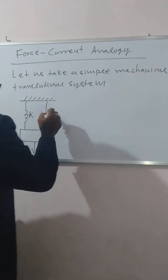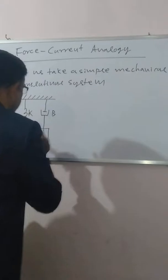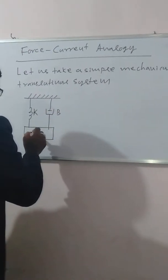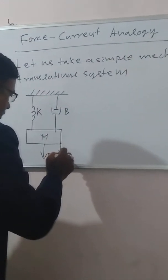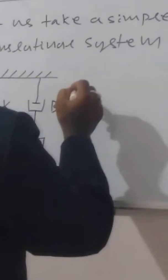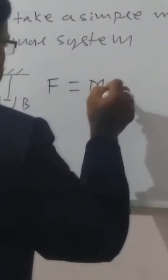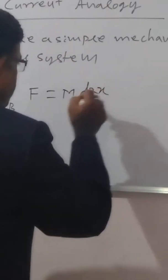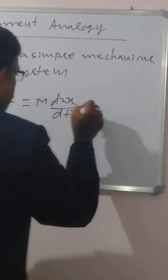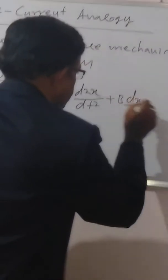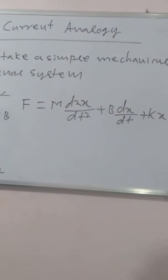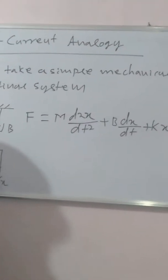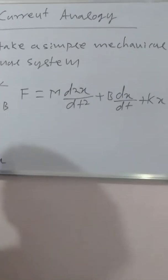This is the spring with stiffness K, this is the damping coefficient B, this is the mass M, this is the input force F, and X is the displacement due to force F. Therefore, the input force F is equal to M d²X/dt² plus B dX/dt plus KX. This is the mathematical modeling of this simple mechanical translational system.